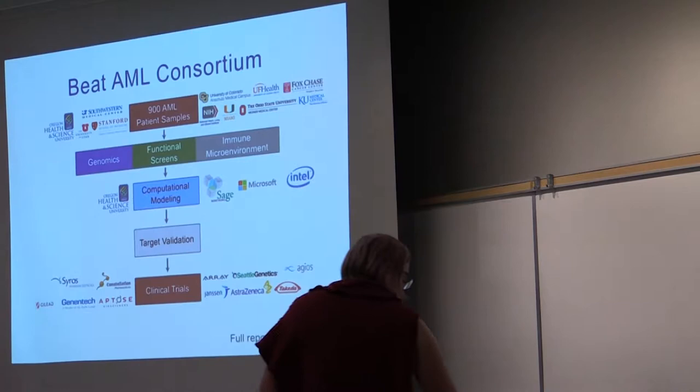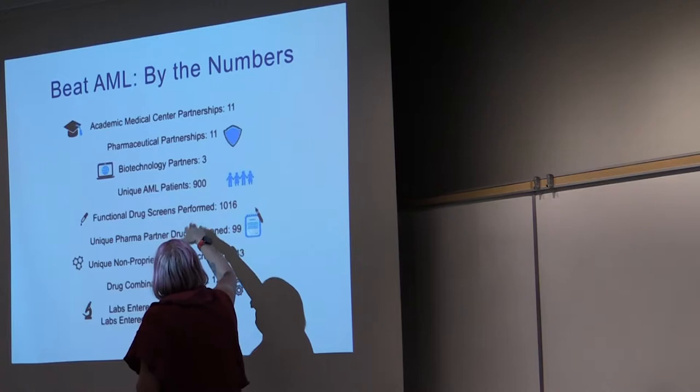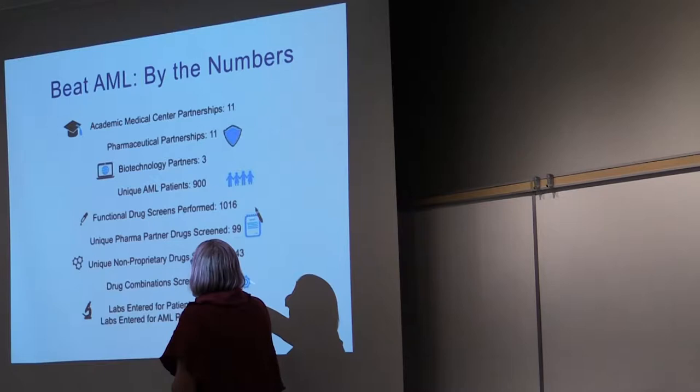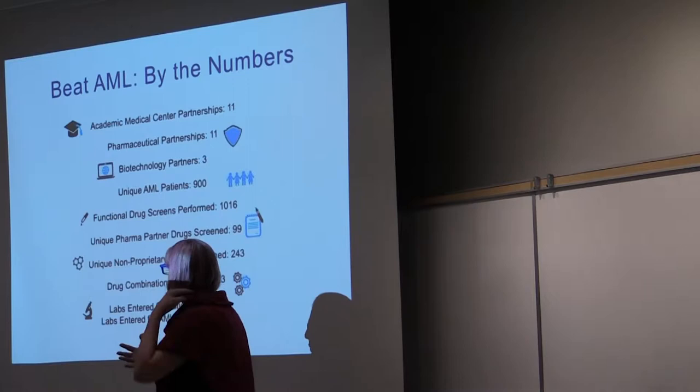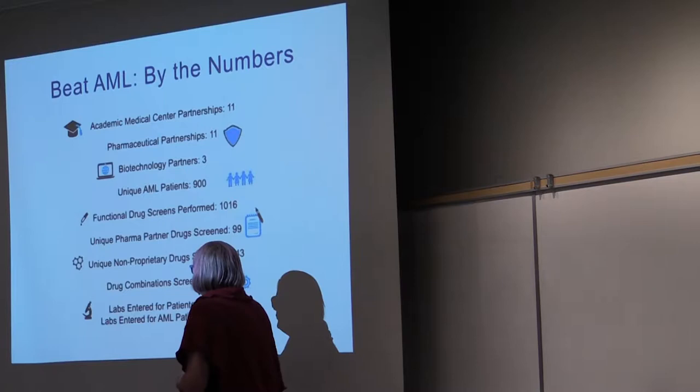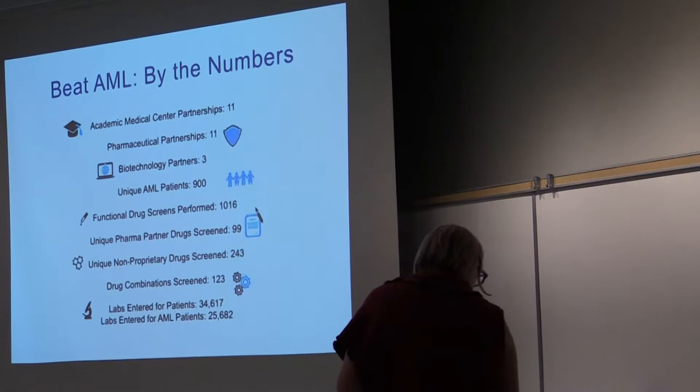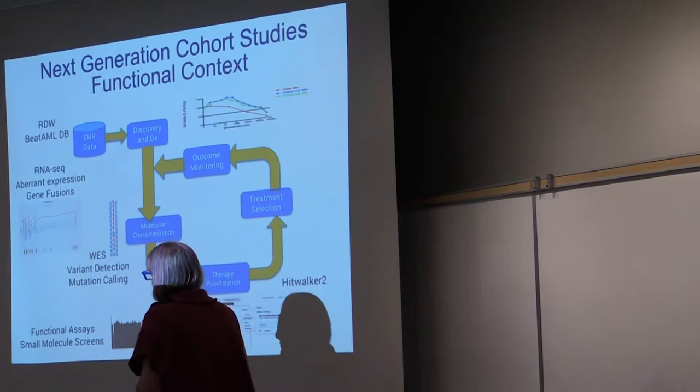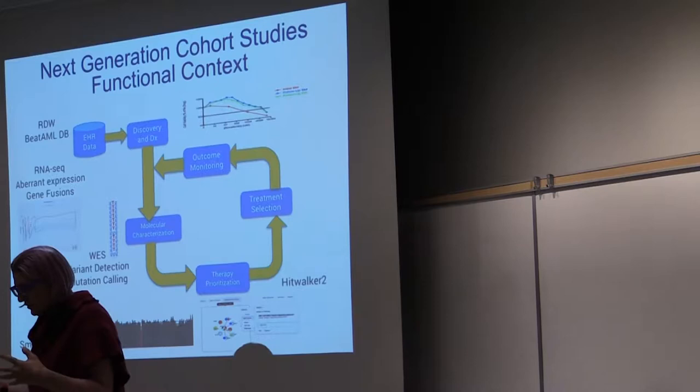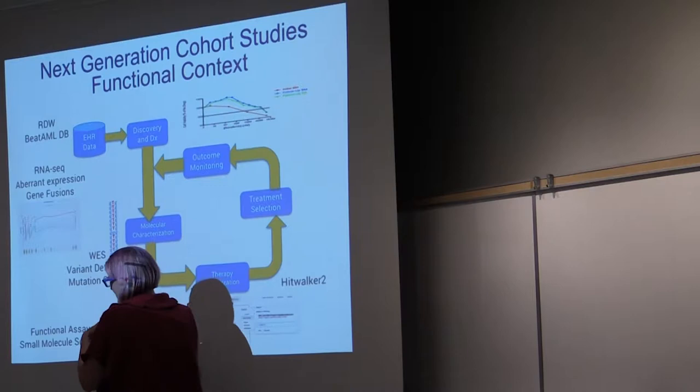Just in terms of some of the numbers, we had 900 partners. You're looking at about 123 different drug combinations, 243 non-proprietary drugs. There were some proprietary drugs that were done, which is important to remember because of the pharma partners. Around 34,000 labs for patients in general, 25,000 that were specific for our AML cohort. A really massive, massive undertaking.